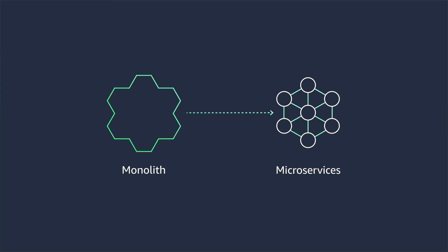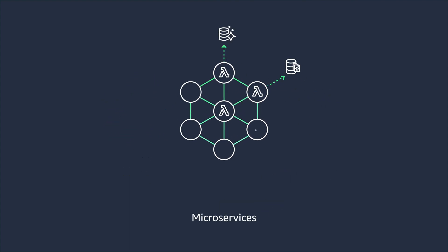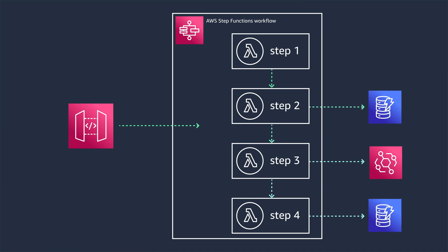Previously, I led a team in re-architecting a monolithic application using a microservices approach. We separated the application into smaller independent services, with each microservice able to define its own data persistence layer. This approach allowed us to build decoupled and independent services that can be developed, deployed, and scaled independently. This increased our scalability, reliability, agility, and ability to deploy features faster. This distributed microservices architecture allowed some business transactions to span multiple services.